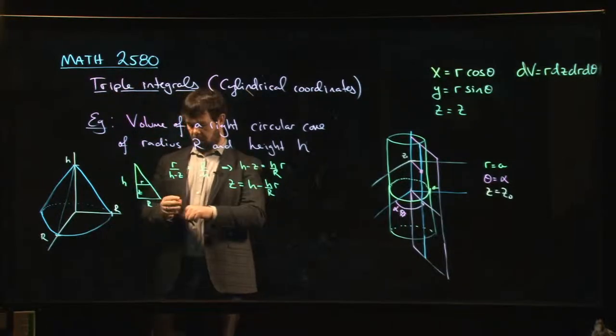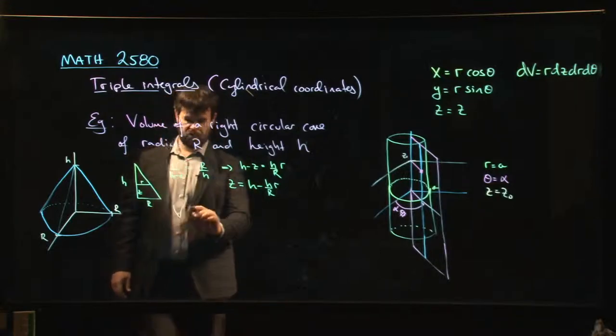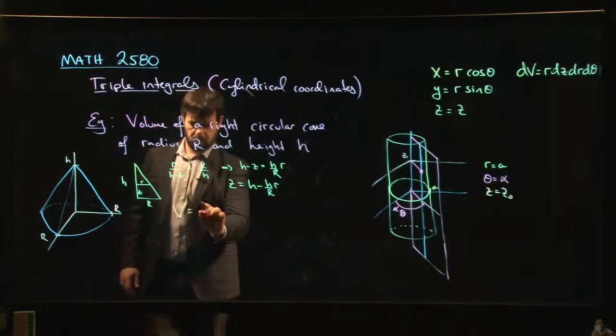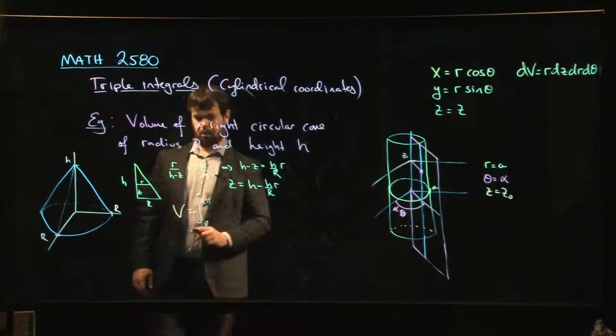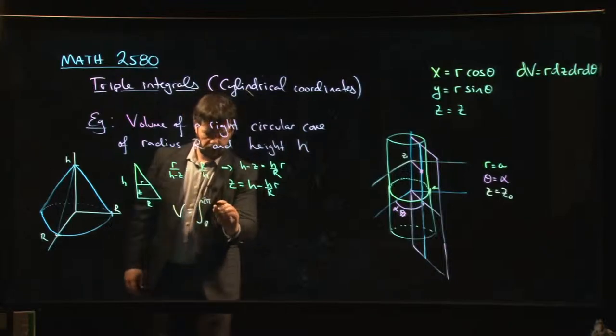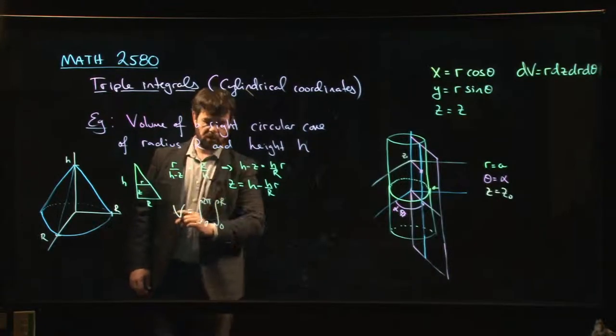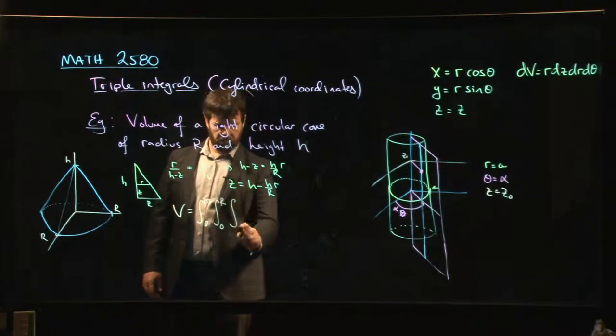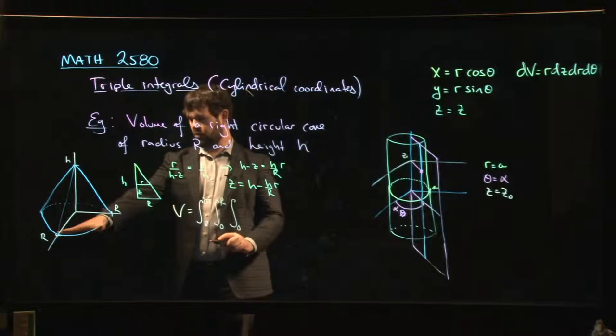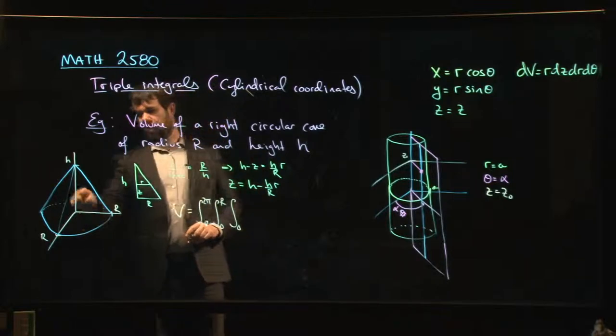We can do some algebra and solve for Z. Now we know that the volume should be given by: theta goes from 0 to 2π, we're going all the way around; r goes from 0 to capital R.